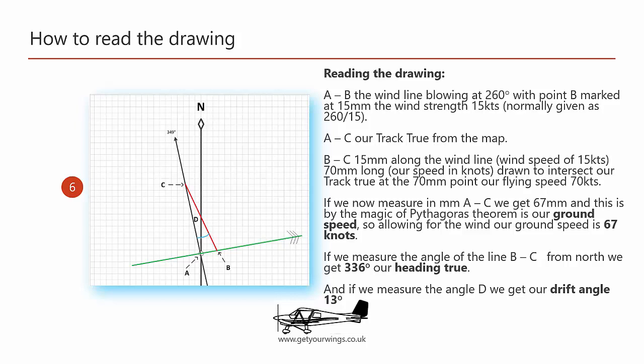B to C, 70mm long as this is our cruising speed of 70 knots. If we now measure in millimeters A to C we get 67mm, ground speed is 67 knots.